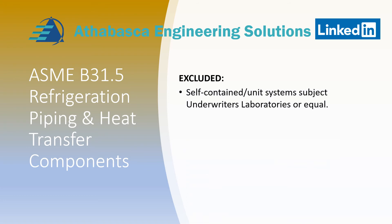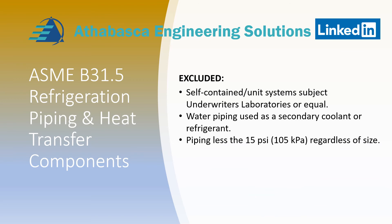Excluded from B31.5 are self-contained unit systems such as those listed by Underwriters Laboratories or equivalent regulatory bodies, water piping used as a secondary coolant or refrigerant, piping less than 15 psi absolute regardless of size — notably the spec references psi absolute rather than gauge, which is worth noting — and pressure vessels, compressors, or pumps.